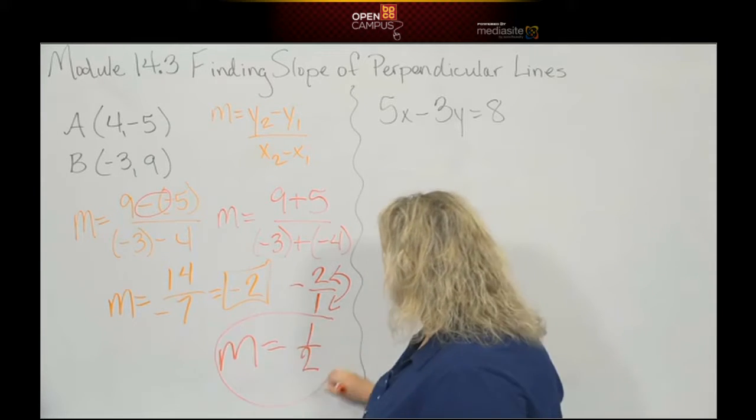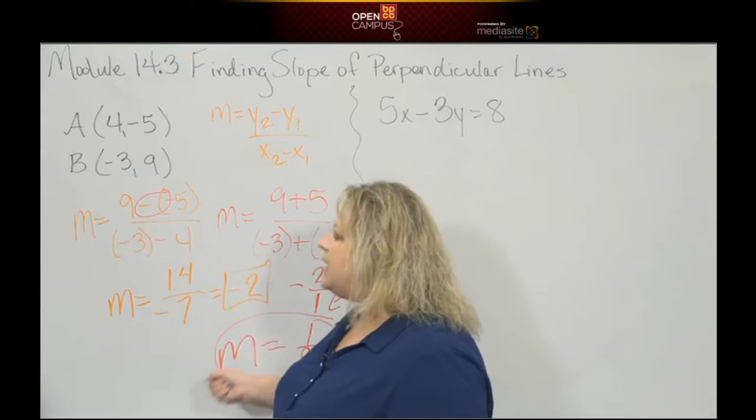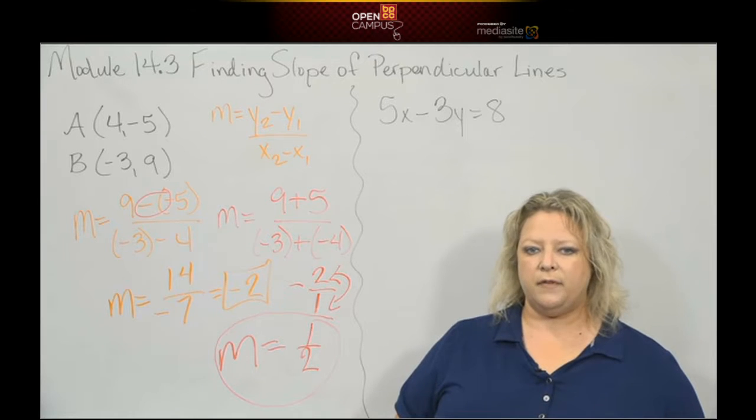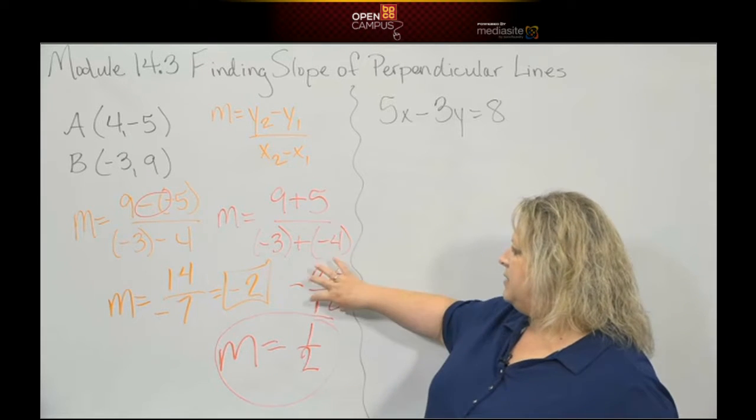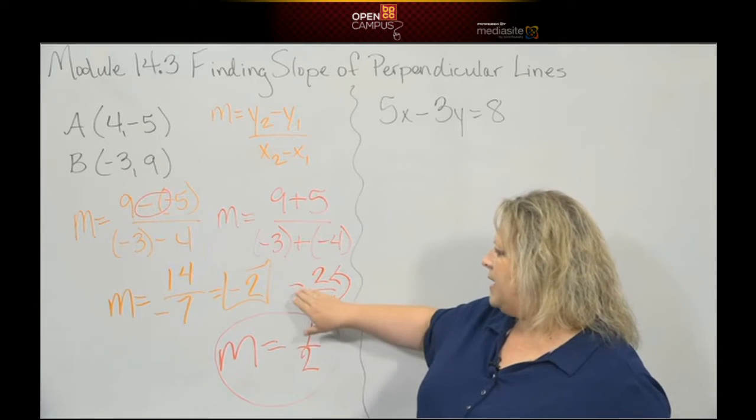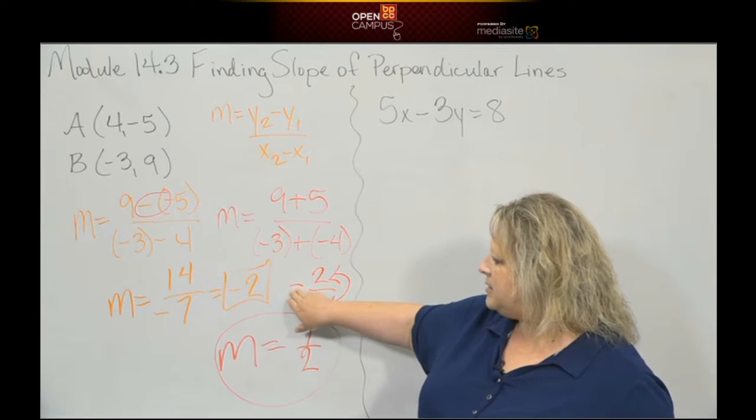So the slope of the line that's perpendicular to this is positive 1 half. Okay, so I did the reciprocal, meaning I took the fraction and I flipped it, and then I did the opposite, meaning I took this sign, and if it was negative here I made it positive here.